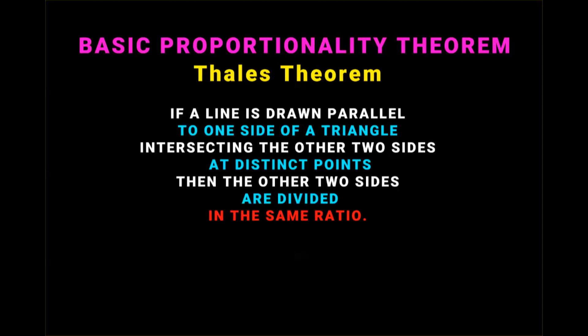According to Thales, what he discovered was: if a line is drawn parallel to one side of a triangle, intersecting the other two sides at distinct points, then the other two sides are divided in the same ratio. I know that it might seem complicated for now, but I assure you that this is very simple.